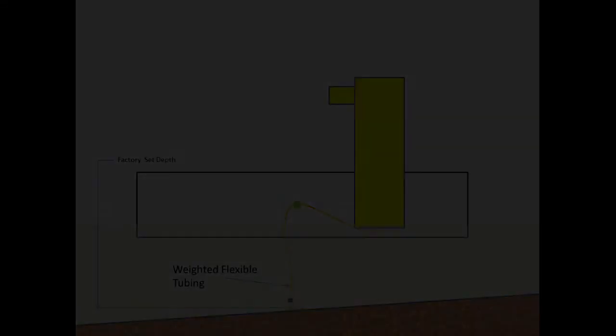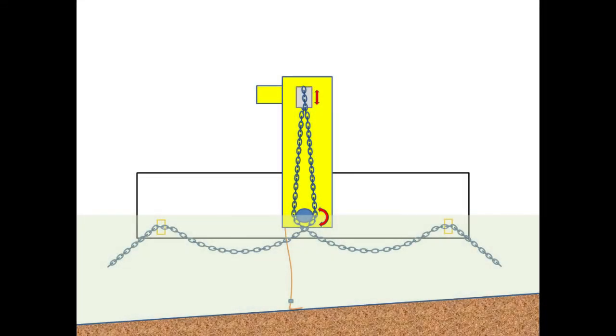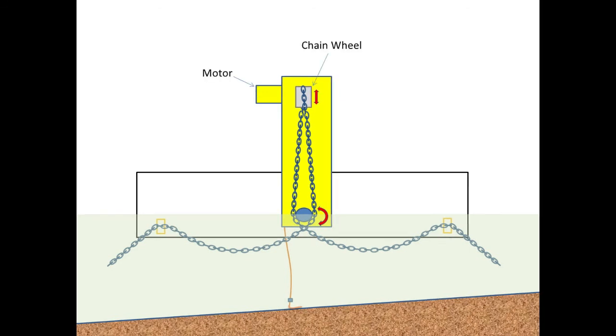To understand how the floating dock patrol works, let's take a look behind the chain guard. The powerful motor turns the chain wheel. The pockets cast into the chain wheel securely engage the chain as the motor turns the wheel. The motion of the chain is directed parallel to the dock by the lower capstan.